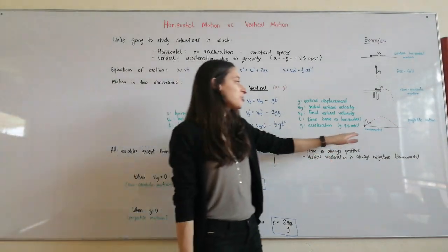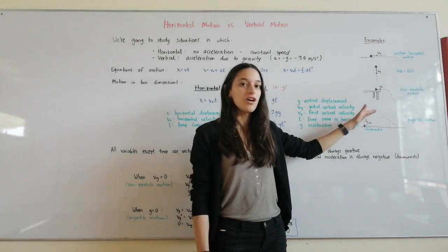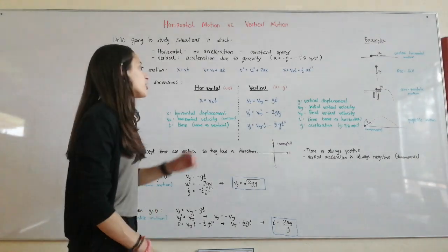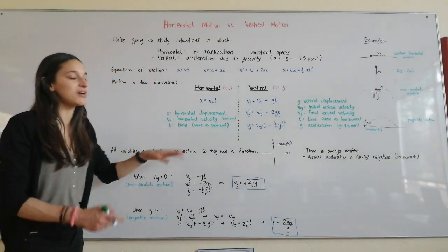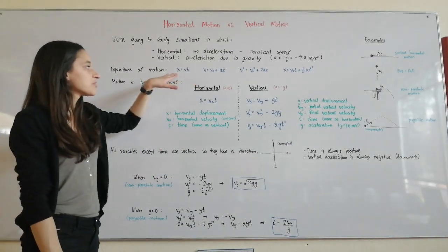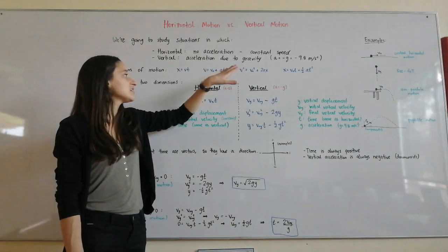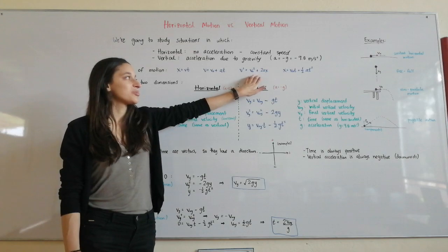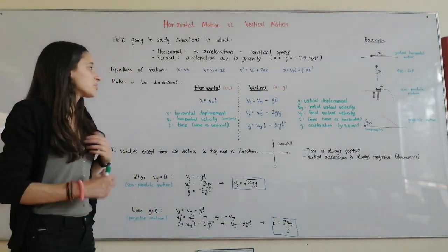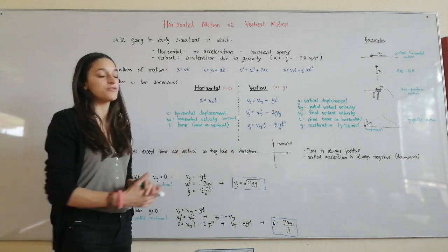In these examples, it's very useful to divide the velocity vector into components — horizontal and vertical — as we saw with vectors. When we learned about these separately, we learned the four equations of motion: v equals v₀ plus at, v squared equals v₀ squared plus 2ax, and x equals v₀t plus one-half at squared. We're now going to use one of them for horizontal motion and three of them for vertical motion.